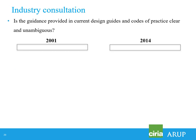To give an idea of the questionnaire feedback: one question was duplicated from the original 2001 C580 questionnaire — 'Is the guidance provided in current design guides and codes of practice clear and unambiguous?' In 2001, 14% said yes and 86% said no. By 2014, this had become close to 50-50 — a massive improvement. C580 had some part to play in that improved understanding. The reasons for 'no' included issues with EC7: it wasn't clear how to use it, how to apply partial factors, and there was not enough guidance on parameter selection, temporary works, and water pressures.